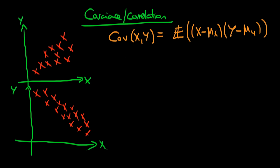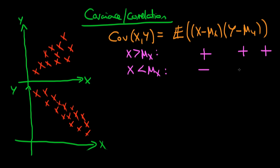Let's think about the intuition behind this formula in the case where we've got a positive relationship. If X is greater than its mean, then the first parenthesis is going to be positive. And because there is a positive relationship between Y and X, Y also tends to be greater than its mean. So overall, this is going to be positive. And if X is less than its mean, then the first parenthesis is negative. But because Y tends to go in the same direction as X, Y would also tend to be lower than its mean — so this would be negative as well. Multiplying two negatives produces a positive. So the covariance between X and Y, when there is a positive relationship, will be positive.